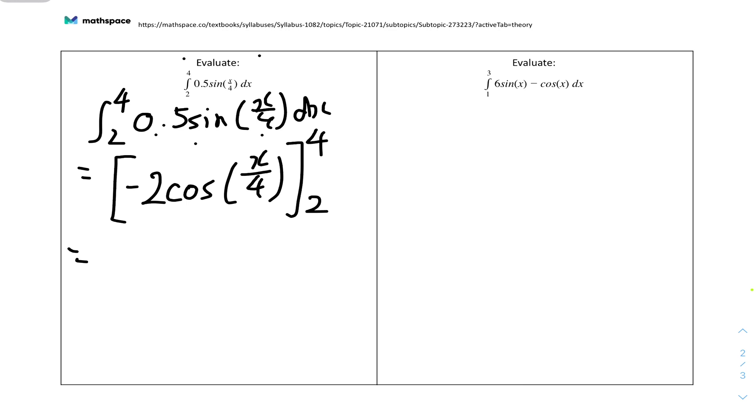And then what you can do now is just evaluate it. So you'll split into two brackets: minus 2 cos(4 over 4) minus minus 2 cos(2 over 4). And then you can type it into your calculator and get a value. My value is 0.675 in radians.